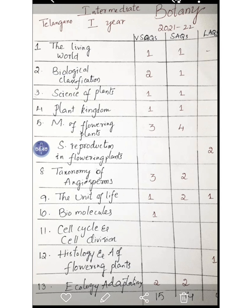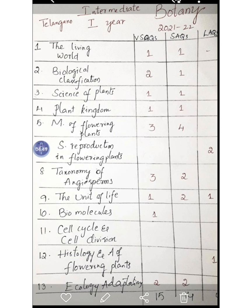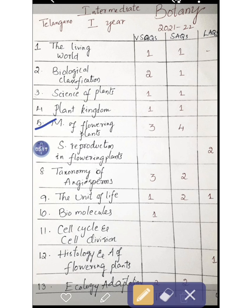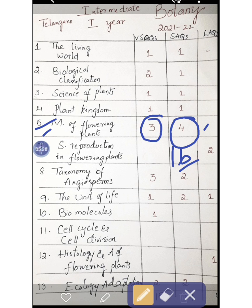Now let's see the chapter-wise analysis of very short, short, and long answers. For very short answers, Chapter 5 has equal scoring chances. If you prepare Chapter 5 thoroughly, you can score well. With three very short answers and four short answer questions from Chapter 5, that gives you 3×2 = 6 and 4×4 = 16 — a total of 22 marks from a single chapter. This makes it easy to pass.